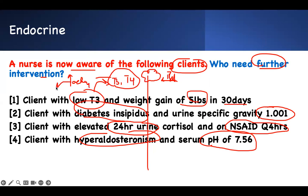If T3 and T4 increase your metabolic activity, you're going to burn fat and lose weight. If you have high levels you lose weight; if you have low levels you gain weight. So this patient with low T3 gaining weight — that is expected. The nurse can acknowledge it and work to increase T3 levels, but this is not a priority because it's an expected finding.